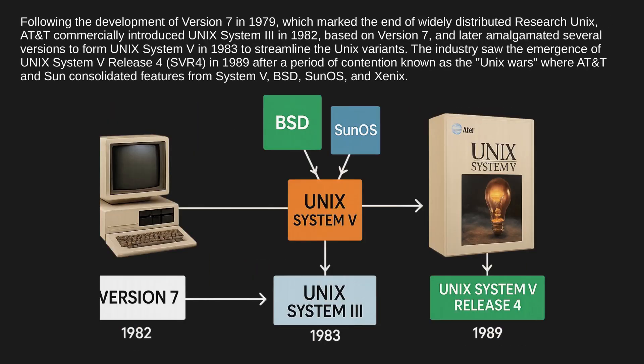Following the development of version 7 in 1979, which marked the end of widely distributed research Unix, AT&T commercially introduced Unix System 3 in 1982 based on version 7, and later amalgamated several versions to form Unix System 5 in 1983. The industry saw the emergence of Unix System V Release 4 (SVR4) in 1989 after a period of contention known as the Unix Wars, where AT&T and Sun consolidated features from System 5, BSD, SunOS, and Xenix.